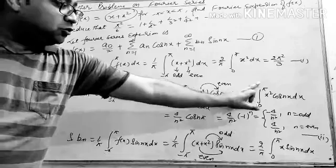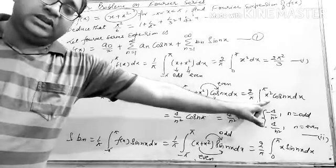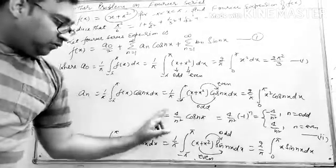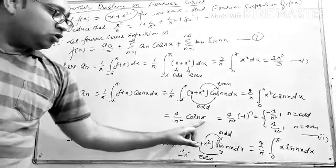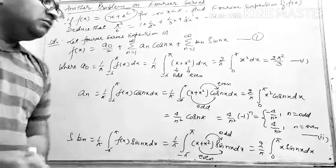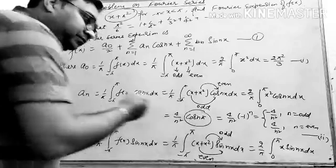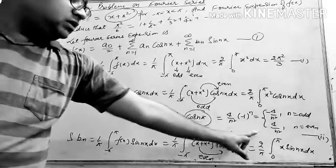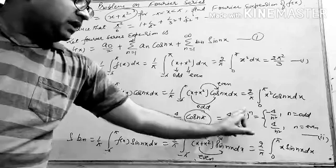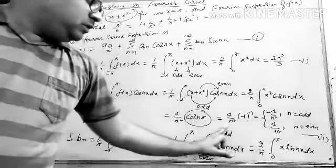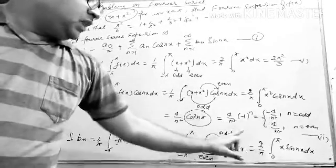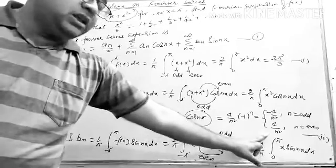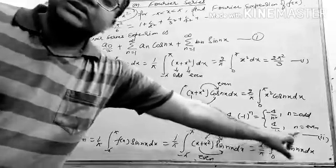This gives (2/π) ∫₀^π x² cos(nx) dx. On solving by integration by parts, we get aₙ = (4/n²) cos(nπ), and since cos(nπ) = (−1)ⁿ, when n is odd it becomes −4/n² and when n is even it becomes +4/n². Let this be result 2.